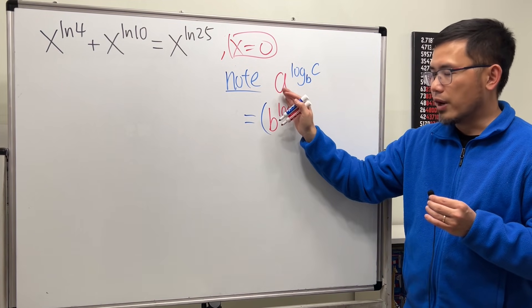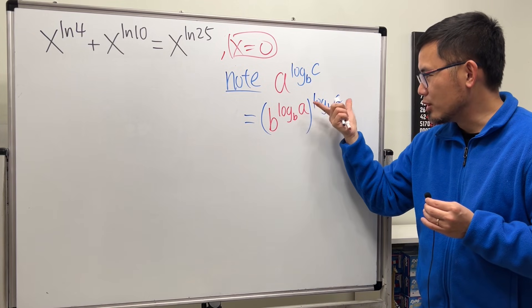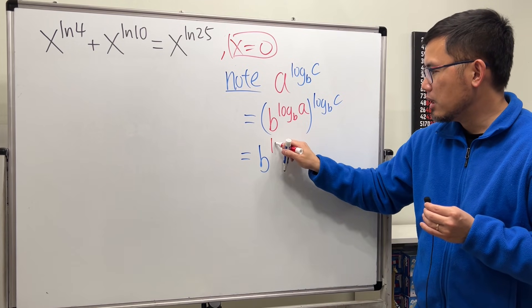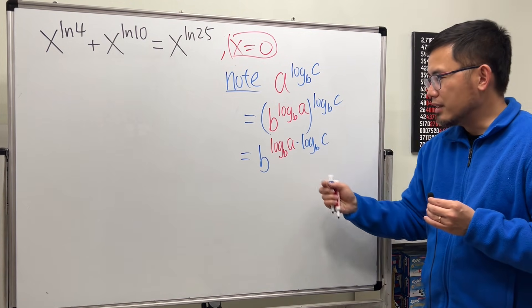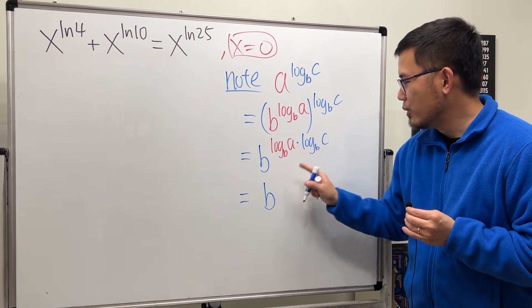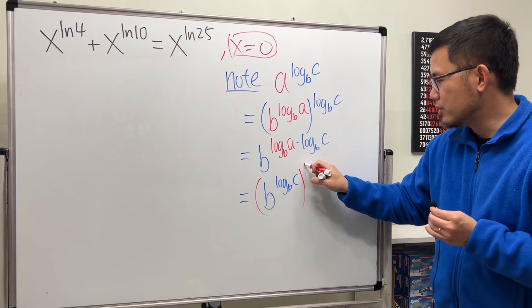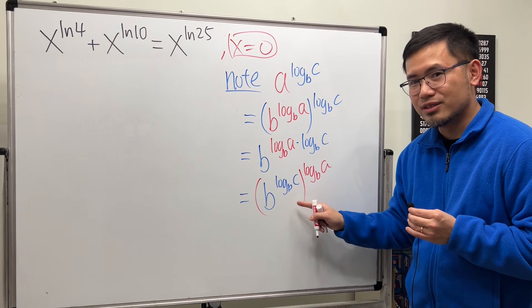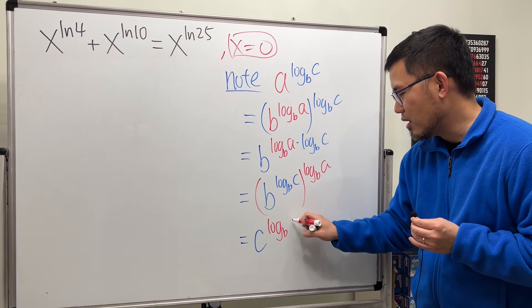Why? Have a look. First, let's purposely write the A as B to the log base B of A power. Because this and that cancel, we will end up with the A back, right? So this is for A, and then take that raised to the log base B of C power. Now we have this power and then to that power. Just multiply the powers. We will get B raised to the log base B of A times log base B of C. The order of multiplication doesn't matter. Take the B first, raise to the log base B of C, and then raise to that power, which is log base B of A. When we do this, this and that cancel. For the base, it will just be C, and then the power is just log base B of A.